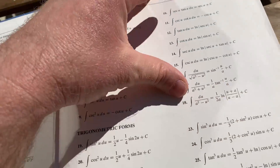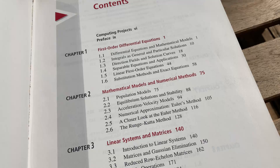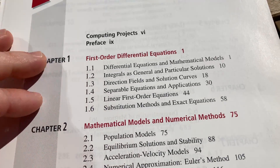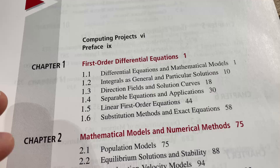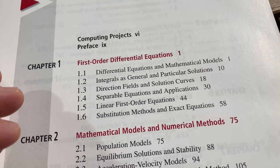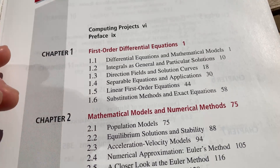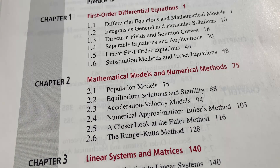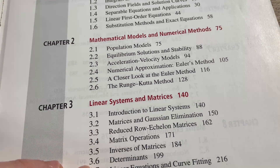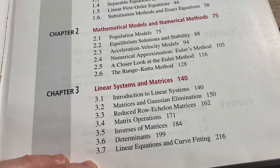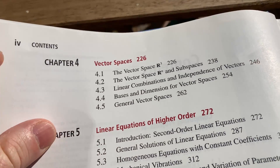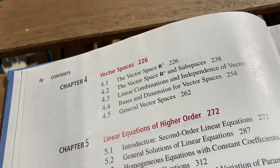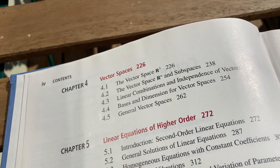Here we have a table of integrals. Here's a quick look at the contents — it starts off with first-order DEs, which is still very standard, the things that you would cover in most college courses. Then chapter two is on mathematical models and numerical methods. Three is on linear systems and matrices. Four is on vector spaces, which is pretty cool — there's an entire chapter on vector spaces. I think that makes this a really cool book because it has that extra content.